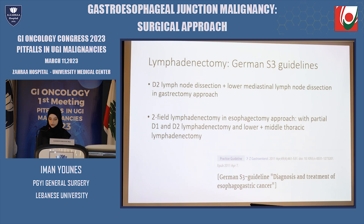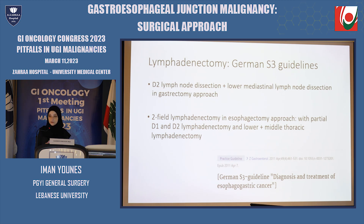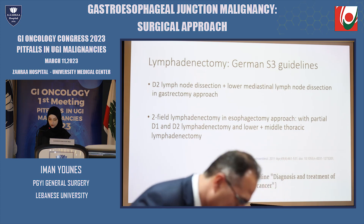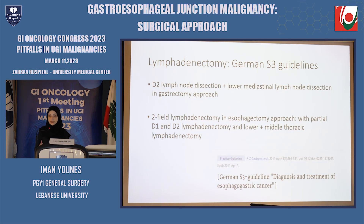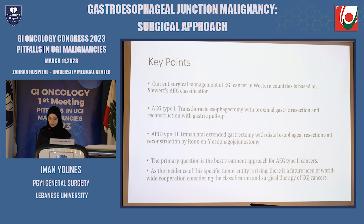To gain more evidence for patient survival, a clinical trial for patients with AEG type 2 cancer, randomized to esophagectomy with cardia and proximal stomach resection or to gastrectomy with transhiatal resection, is currently planned for publication in Germany. This trial defines overall survival as the primary endpoint and aims to answer the question of oncologic accuracy of both approaches. German guidelines recommend a D2 lymph node dissection and lower mediastinal lymph node dissection when gastrectomy is applied, and a two-field lymphadenectomy for the esophagectomy approach, in which a partial D1 and D2 lymphadenectomy and lower and middle mediastinal lymphadenectomy are routinely included.